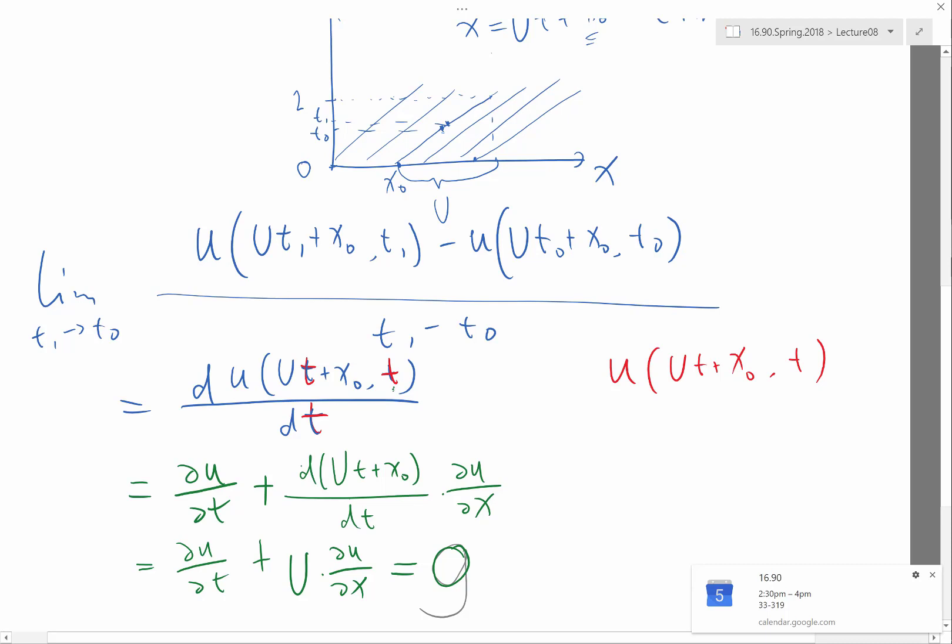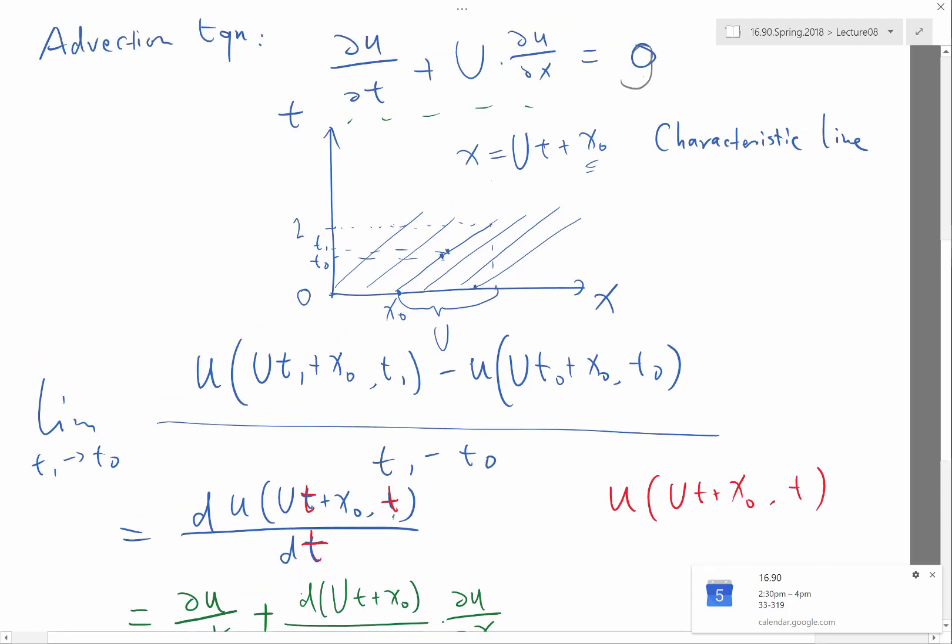In this case, my characteristic line is still going to be a straight line because u would be a changing function along the characteristic line. So the characteristic line is still going to be defined as these lines. But instead of the solution being constant along these lines, you can actually solve the solution along these lines as if they are ordinary differential equations. Does it make sense?